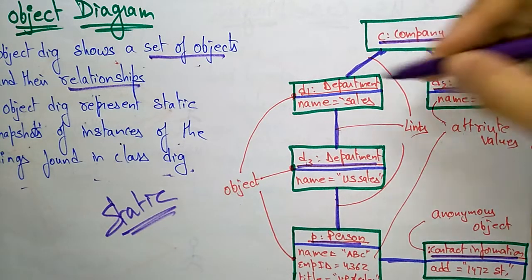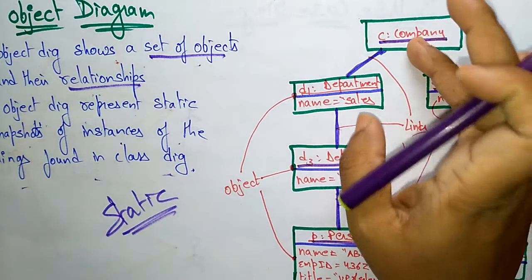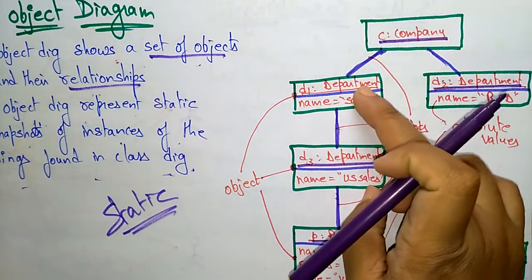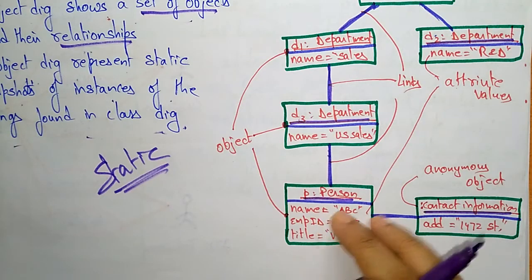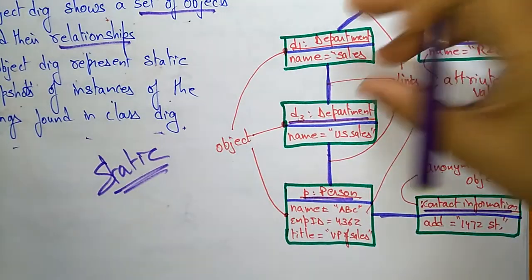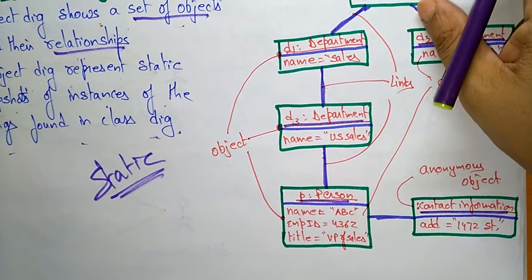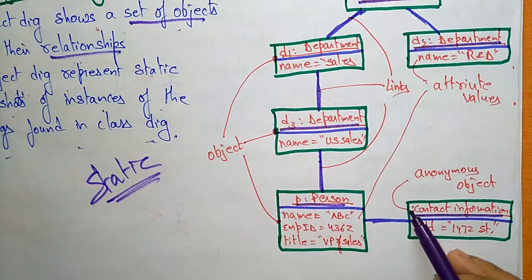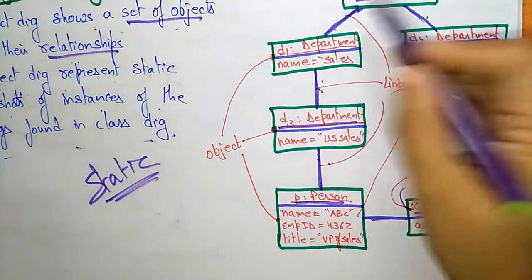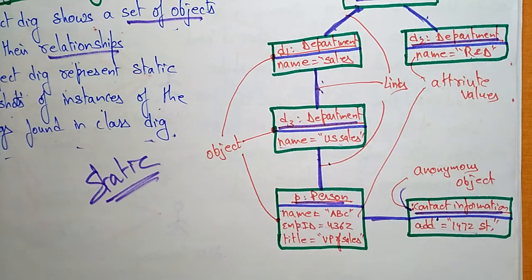Here, 'ac' is an object of the Company class, 'd2' and 'd1' are objects of the Department class. A department is related to the Company class. Department 'd3' is an object related to Department, and Person is a class related to the Department class. Each object communicates with another by passing messages. These are the anonymous objects, links or relationships, and the attribute values for each object are already initialized.